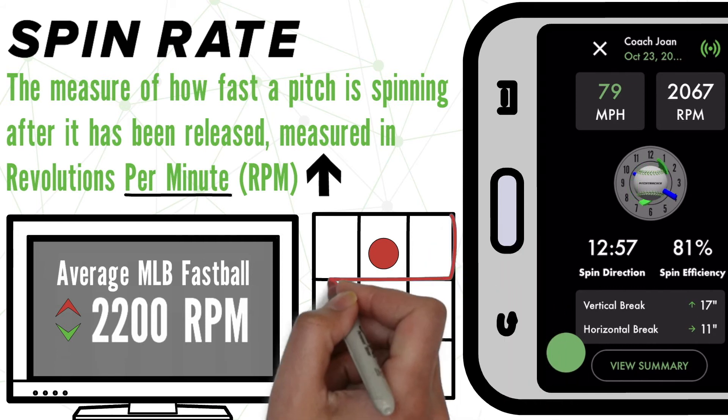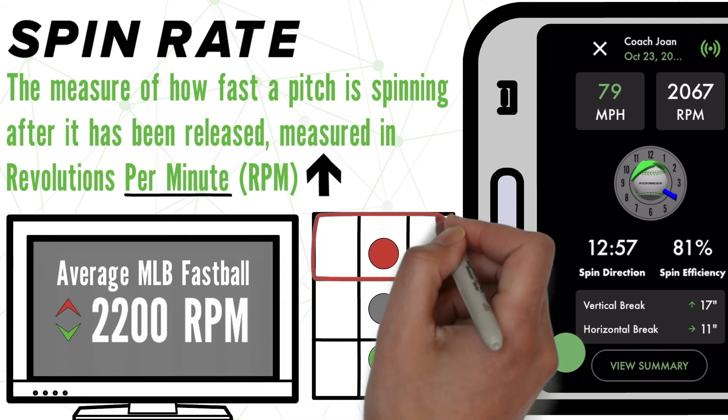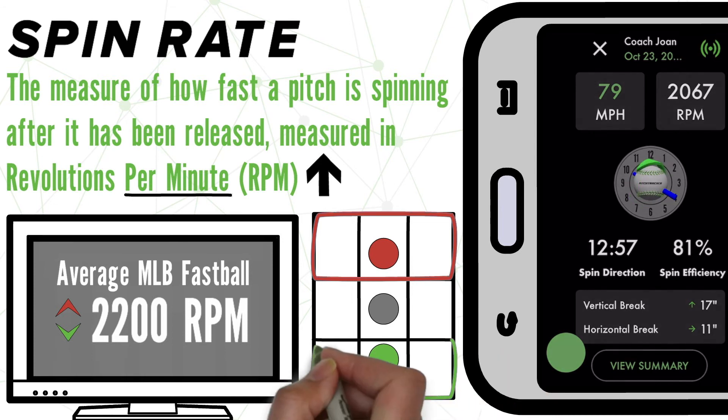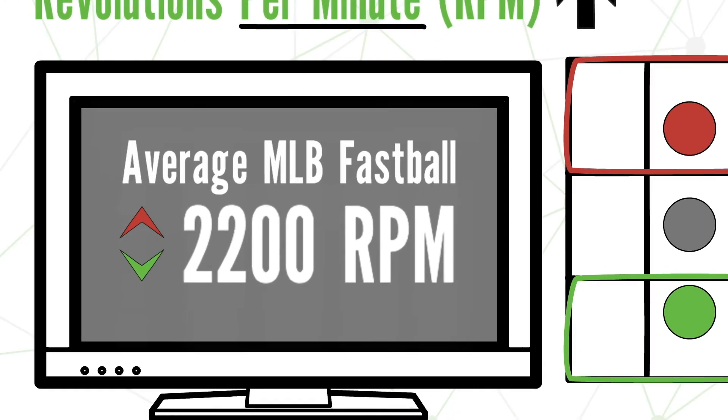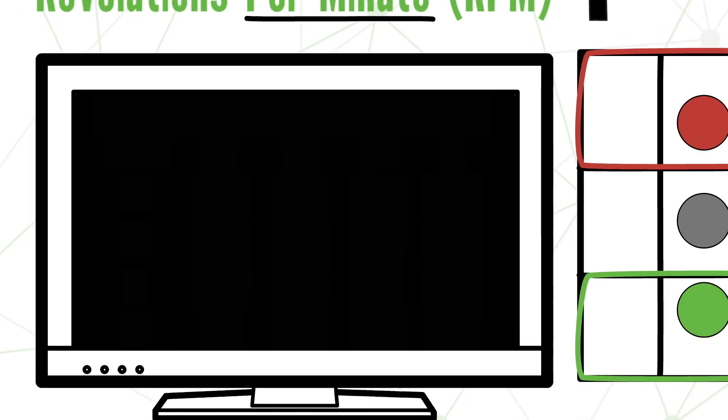Because of this, pitchers with high spin rate on their fastball should throw up in the zone, and low spin rate pitchers should throw their fastballs lower in the zone.